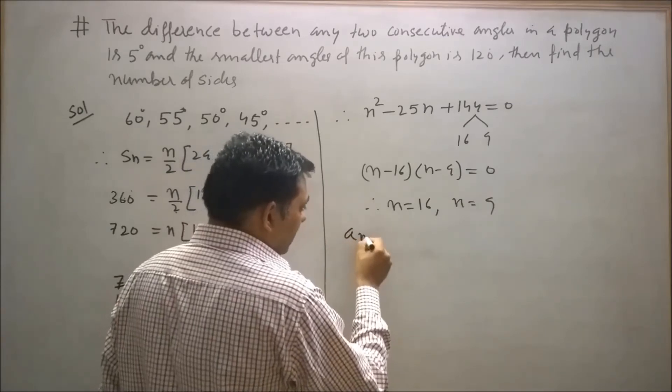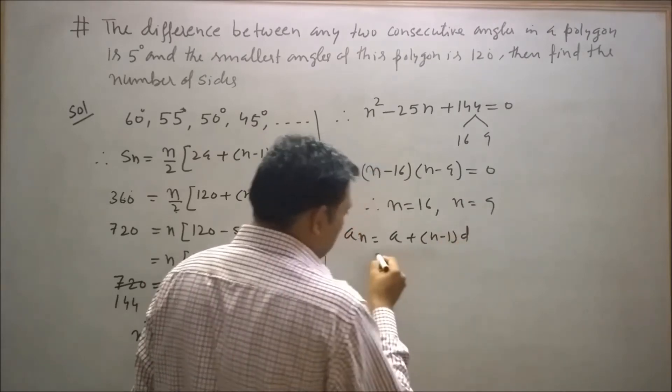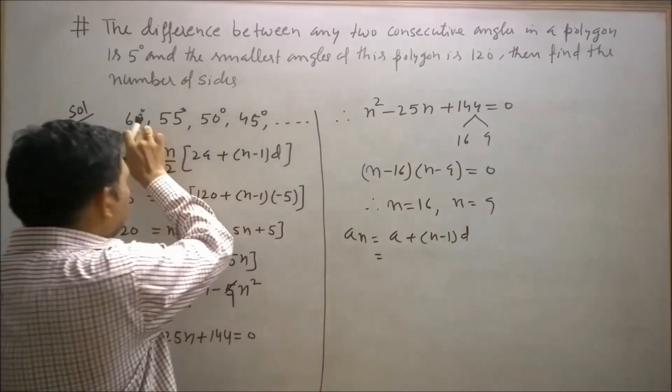So find aₙ. aₙ = a + (n-1)d, where a is the first term, which is 60.